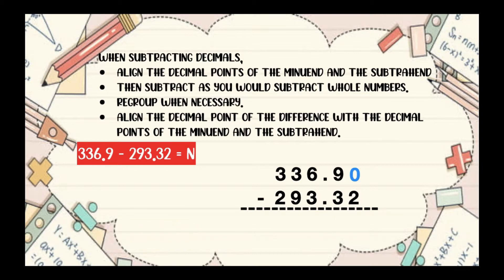0 minus 2 cannot be, that's why we're going to borrow 1 from 9. 9 will become 8, while the 0 will become 10. Then 10 minus 2, that is 8. 8 minus 3 is 5. Don't forget to copy the decimal point. Then let's proceed to the 1's place. 6 minus 3, that is 3.